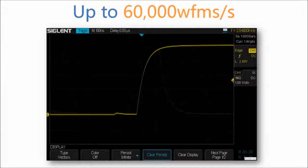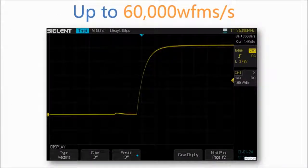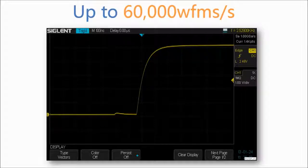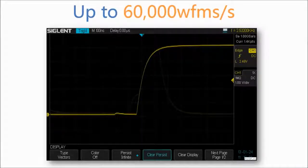The SDS1000X has a capture waveform rate up to 60,000 waveforms per second. At this rate, the oscilloscope can easily capture unusual or low probability events.